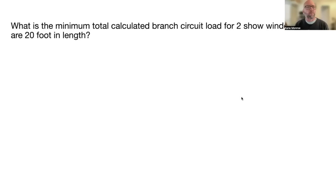What is the minimum total calculated branch circuit load for two show windows that are 20 feet in length? 8,000 VA. NEC 220.14g2. Two times 20 is 40 feet times 200 VA is 8,000 VA.